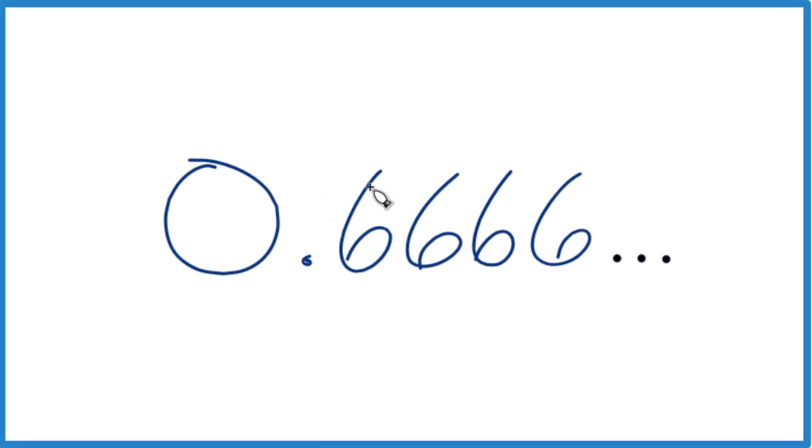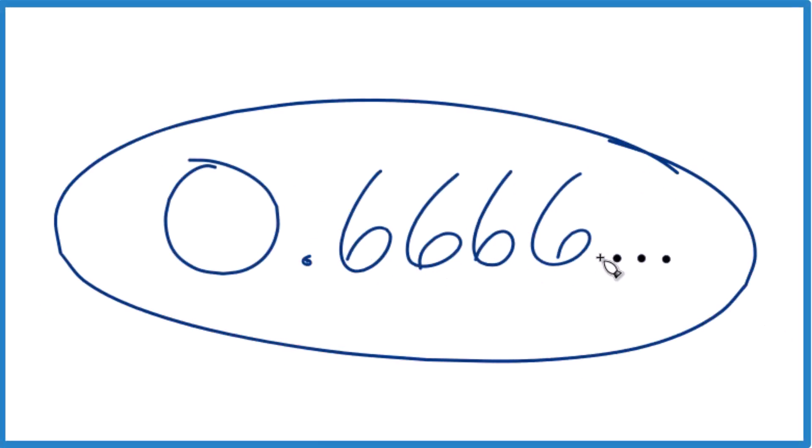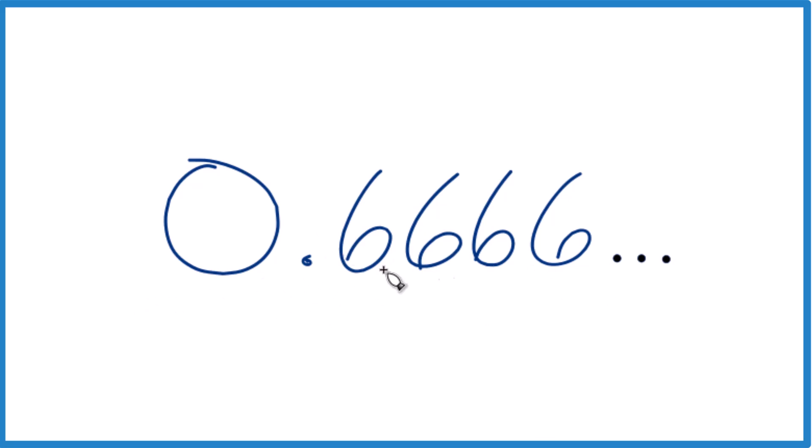So let's say you're given the decimal 0.6666, and those sixes, they keep repeating. How do you get that to be a fraction? It's a little bit difficult because this is a repeating fraction. This just keeps going. So here's one way to do it.